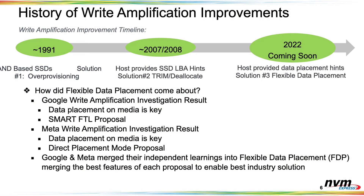What we're getting into here is flexible data placement, which is coming soon — we're working on standardizing it. At Google, we were looking at write amplification and believe the placement of data initially on the drive is critical to solving that problem. We had a smart FTL proposal, which we talked about at OCP last fall. In parallel, Meta has been working on write amplification and data placement and had a direct placement mode proposal. We were both hunting in the same pool and came up with the same answer, so we decided to get together and make one combined proposal — currently called flexible data placement mode.